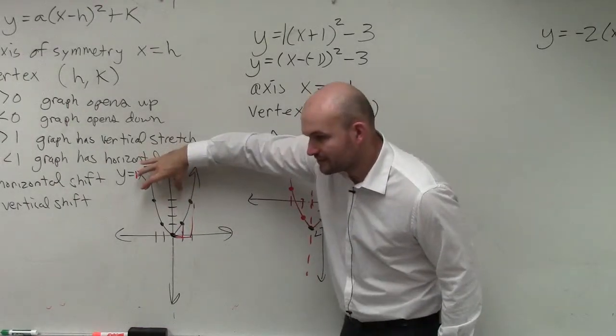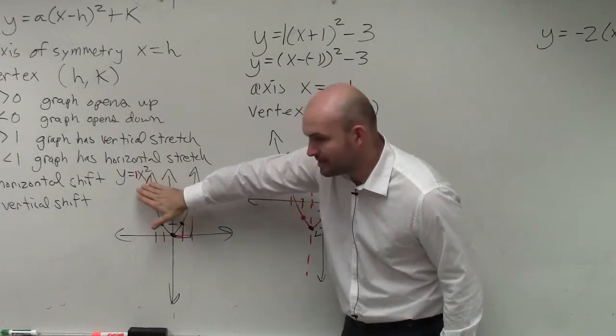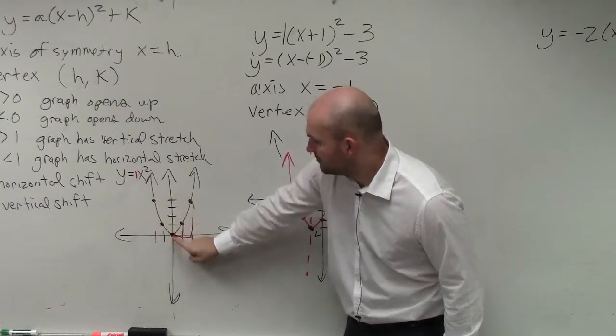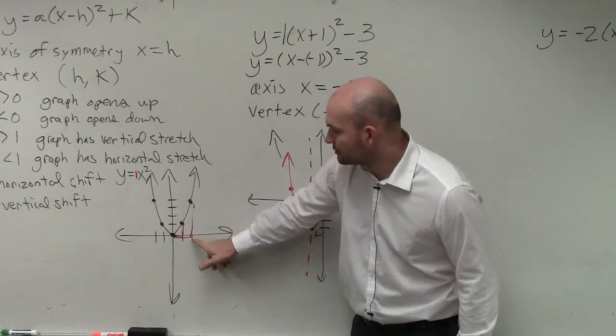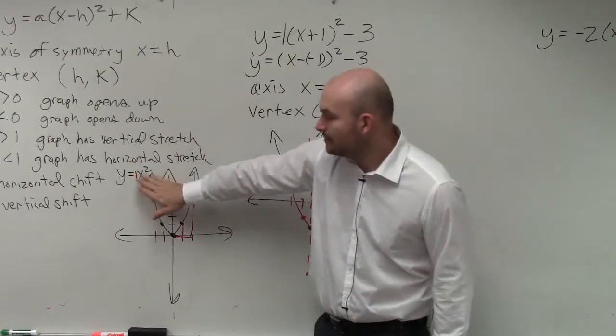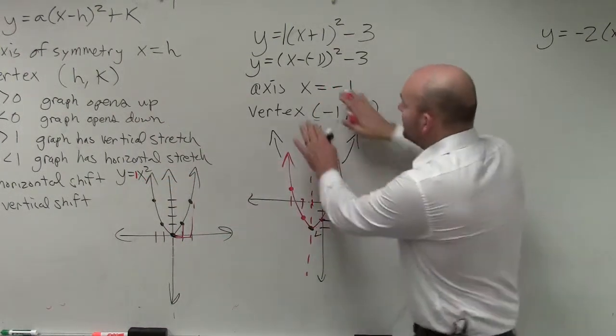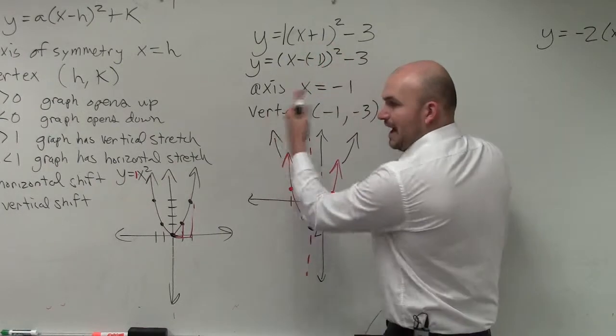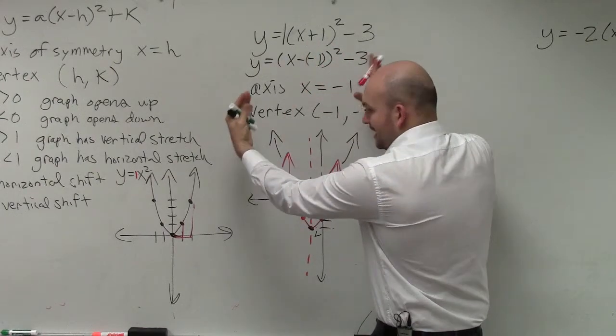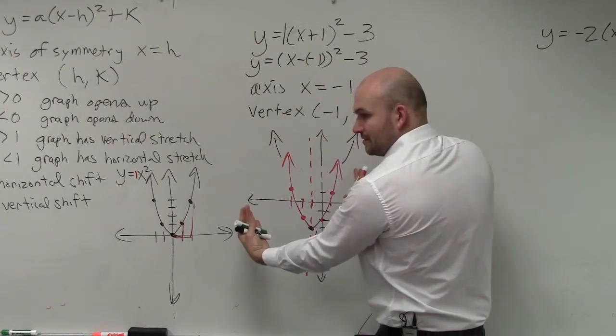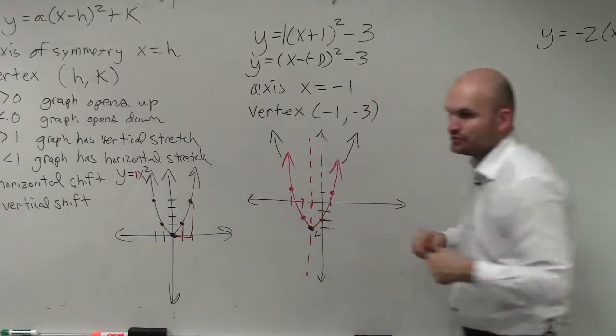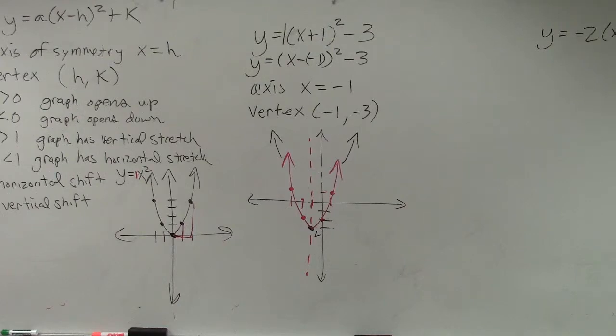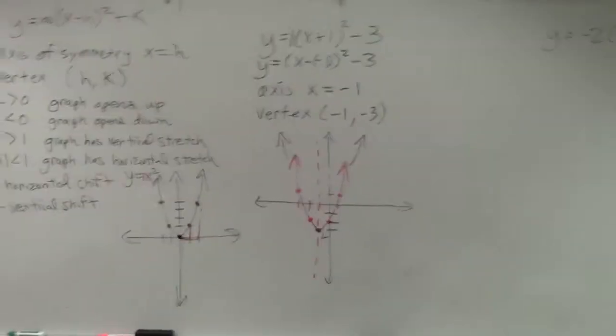Because look, here is the parent graph, here with no transformations. The next point goes over 1, up 1. Over 2, up 4. The only transformations, look, what is the only thing I did with this graph? I shifted it to the left and I shifted it down 3, right? I didn't do any, I'm not making any other changes to the graph. The only thing I'm changing is I'm shifting.